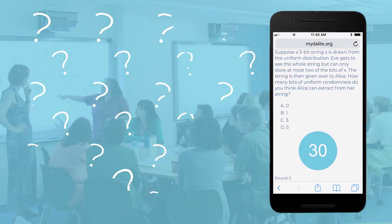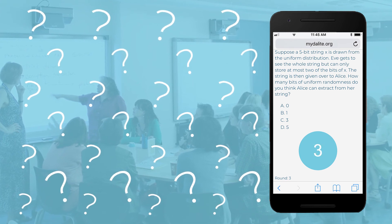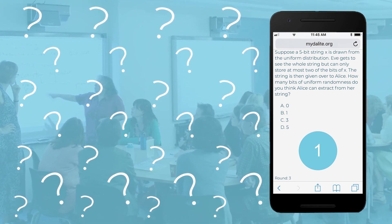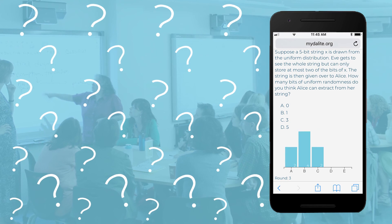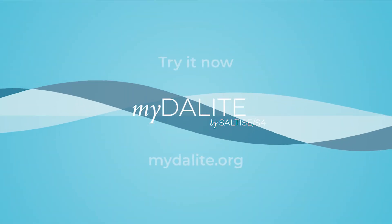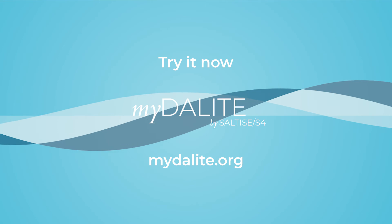You can also use the same questions without asking students for explanations as a quick in-class polling tool. We call this Blink. Try it now! Sign up at mydaylight.org.